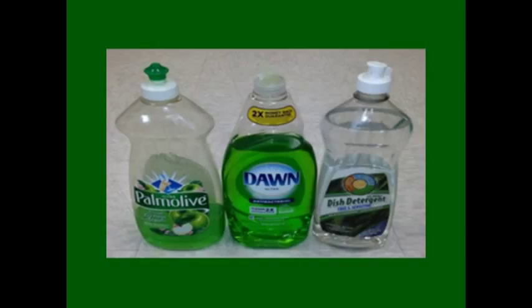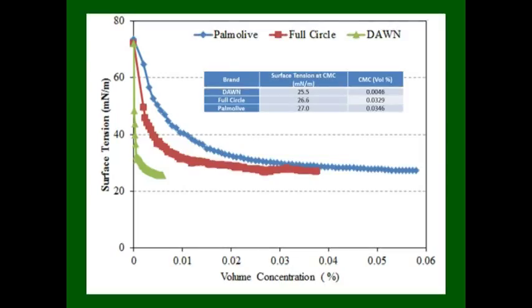For the test, three different types of dish soap were compared: Dawn, Palmolive, and Full Circle. In the CMC results, Palmolive is about 7.5 times more than Dawn, and Full Circle was about 7 times more than Dawn. This indicates that you can use less detergent when using Dawn than when using Full Circle or Palmolive. From the surface tension values, you can see that Dawn had the highest surface tension reduction, at 25.5, indicating a higher affinity between water and the other substance.